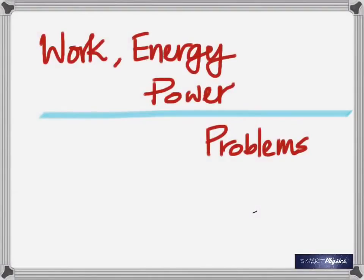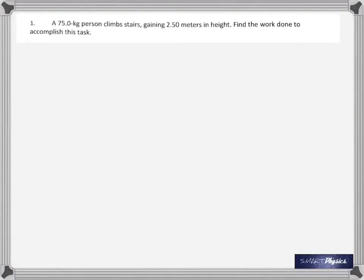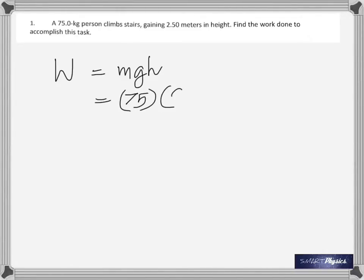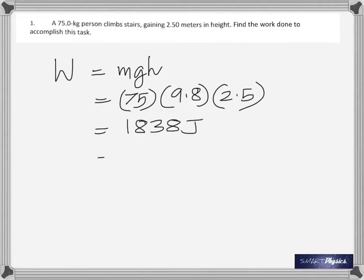A 75-kilogram person climbs stairs gaining 2.50 meters in height. Find the work done. Work done is W = MGH because he's giving himself potential energy. 75 times 9.8 times 2.5 gives you 1838 joules. Considering significant figures, it's 1.8 times 10 to the power 3 joules — that's the answer to the first one.